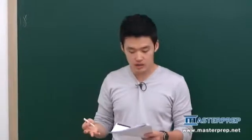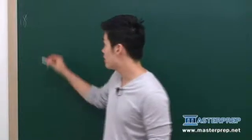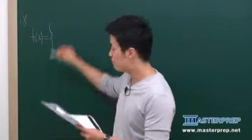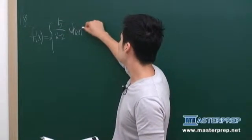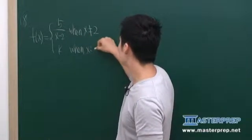We have a piecewise function: f of x which is equal to 5 over x minus 2 when x is not equal to 2, and k when x is equal to 2.